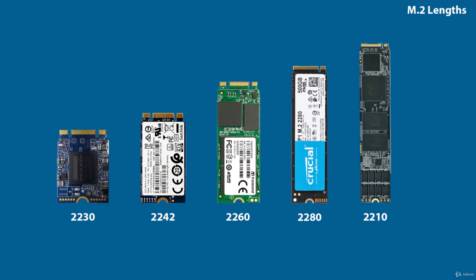M.2 size designations are: M.2 2230 (22mm wide by 30mm long), M.2 2242 (22mm wide by 42mm long), M.2 2260 (22mm wide by 60mm long), and M.2 2280 (22mm wide by 80mm long). Some motherboards are flexible, offering mounting holes for the retention screw at some or all of these intervals.